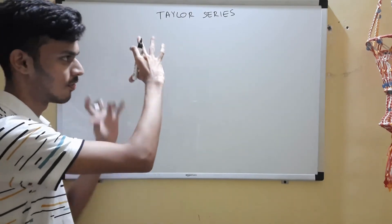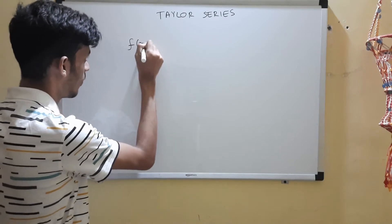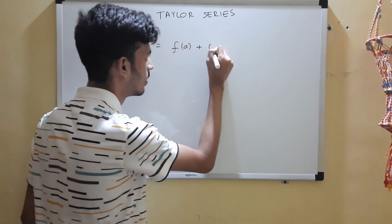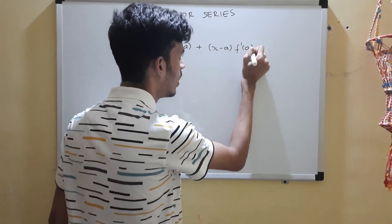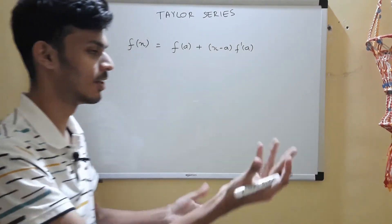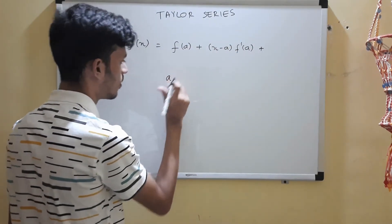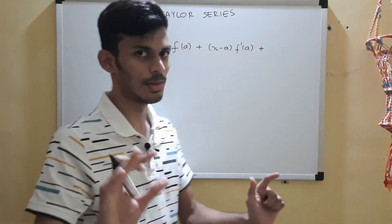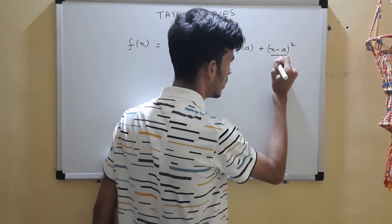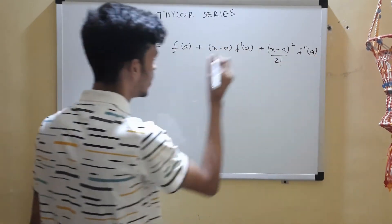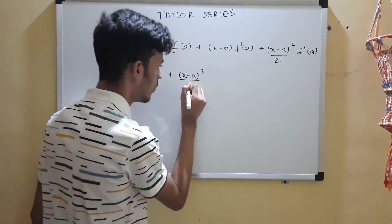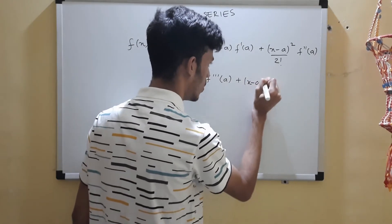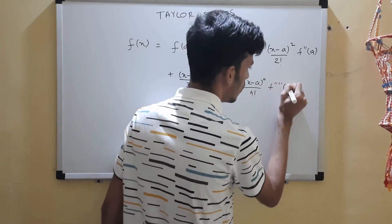Now for the Taylor series formula. For any function f(x) — polynomial or non-polynomial — you can express it as: f(a) plus (x minus a) times f'(a) plus (x minus a) squared upon 2 factorial times f''(a) plus (x minus a) cubed upon 3 factorial times f'''(a) plus (x minus a) to the fourth upon 4 factorial times f''''(a), and so on. Here, 'a' is the point about which you are finding the Taylor series.